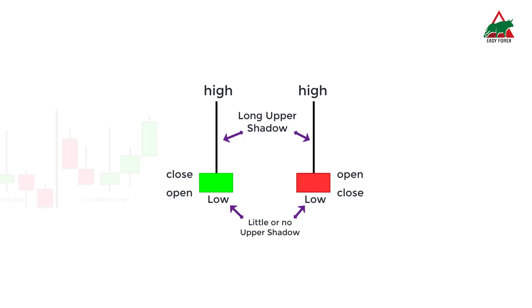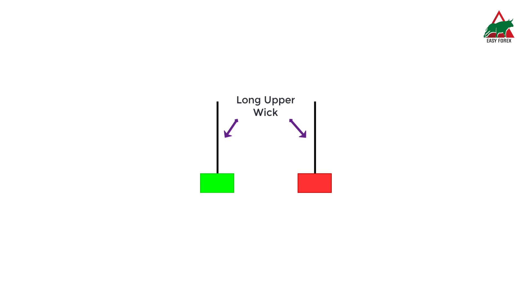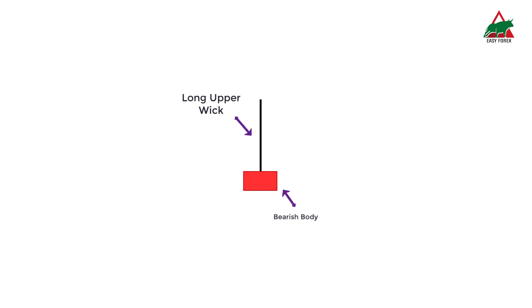A shooting star looks exactly the same as an inverted hammer candlestick. The long upper wick indicates that the buyers are losing their position as the price drops back to the near opening position, erasing the gains for the day. A shooting star can have both a bullish and bearish body, but the bearish shooting star is considered a stronger formation because the bears were able to reject the bulls completely, plus the bears were able to push prices even more by closing below the opening price.